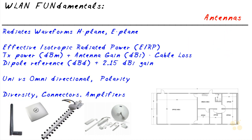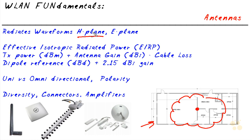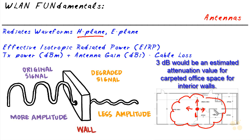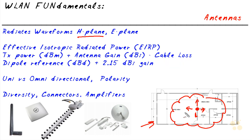Let's talk about the H plane and E plane. Imagine we have an access point and we're looking down at the office space — that top-down view of the radiated signal going off the access point is referred to as the H plane, or horizontal plane. With an omnidirectional antenna the signal goes out in every direction, and as it starts hitting doors and getting absorbed and reflected the signal can weaken. We can categorize this power using dBm — decibels in relation to milliwatts.